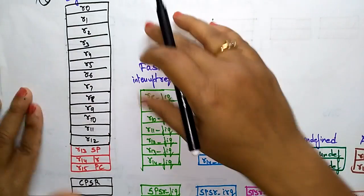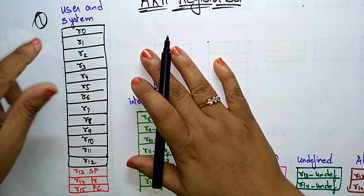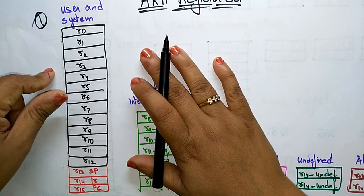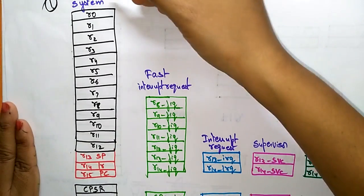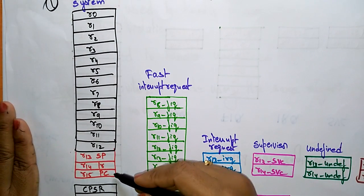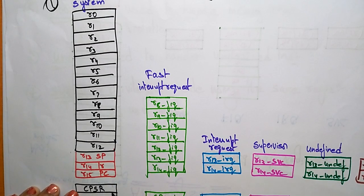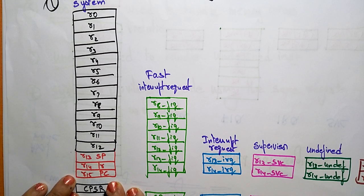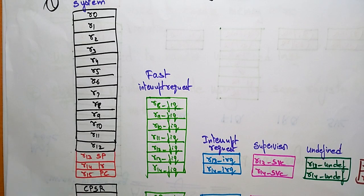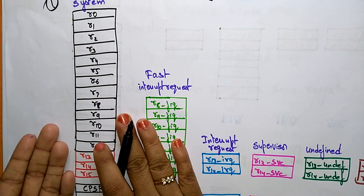Let's take the user and system mode first. This user and system mode has access permissions for all 15 registers, and CPSR as well. So it has permission to access all the registers present in the ARM processor, and it can also access the CPSR.